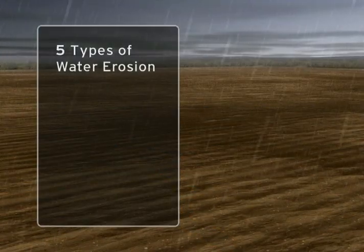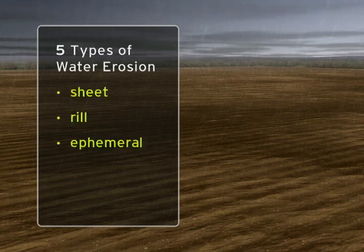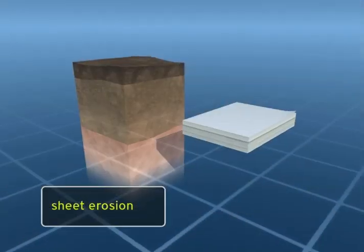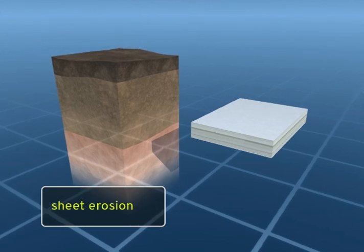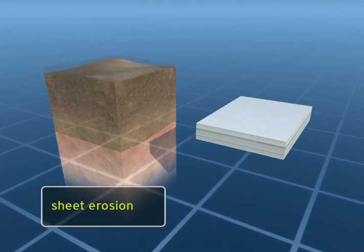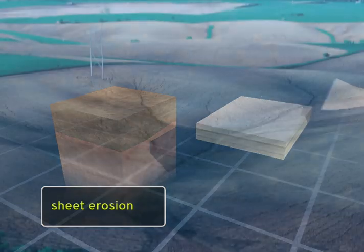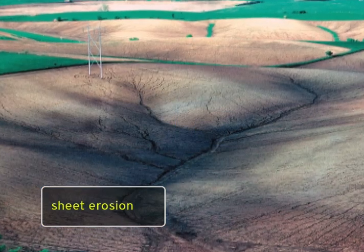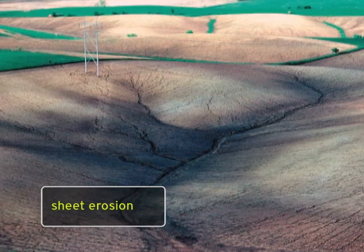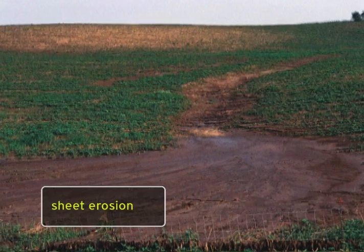Water erosion can be classified in five different types: sheet, rill, ephemeral, gully, and stream bank. Sheet erosion is a subtle type of erosion that can be very damaging over time. It involves the loss of thin, uniform layers of topsoil over the entire field. Soil loss can go almost unnoticed until many years have passed and the subsoil is exposed. By the time you notice the loss, the damage is already done.